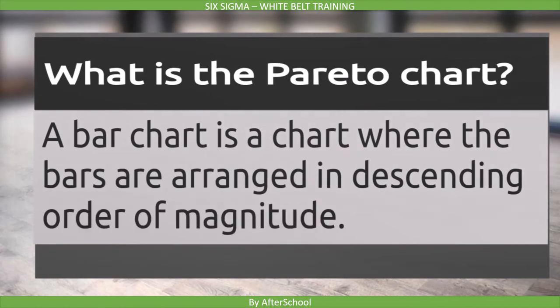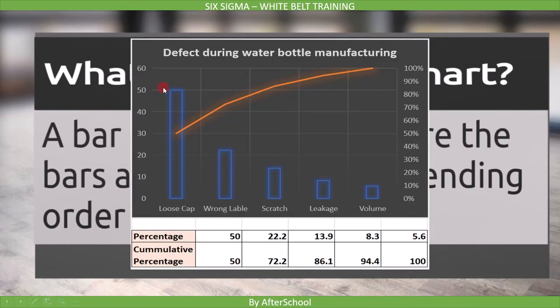The first question is: what is the Pareto chart? It is a simple yet powerful chart that presents data in descending order of magnitude. A Pareto chart contains both bars and a line graph, where individual values are represented in descending order by bars, and the cumulative total is represented by the line.